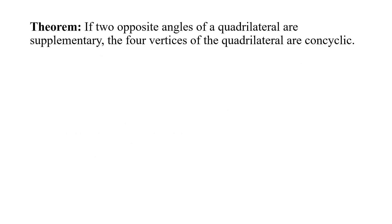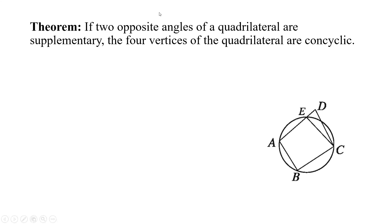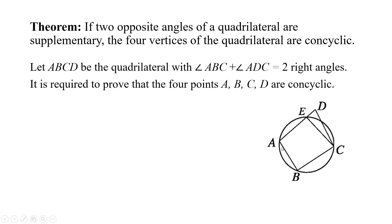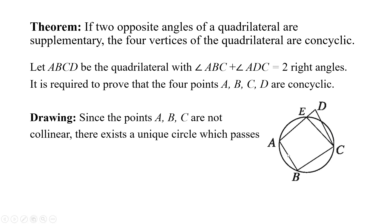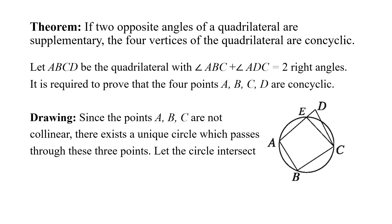Now, another theorem. See this figure. If two opposite angles of a quadrilateral are supplementary, the four vertices of the quadrilateral are concyclic. Let ABCD be the quadrilateral with angle ABC plus angle ADC equal to two right angles. It is required to prove that the four points A, B, C, and D are concyclic. Drawing: since the points A, B, C are not collinear, there exists a unique circle which passes through these three points. Let the circle intersect AD at E.